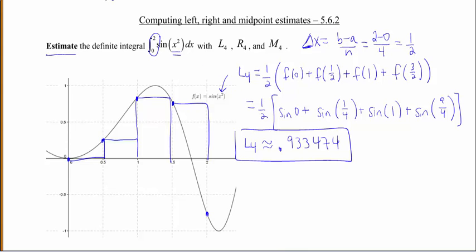Let me switch colors on us. Let's go to R4. So we're still going to be using the same points, but now we're going to be going from the right-hand side instead of the left-hand side. So this time I'm going to start at 0.5. I'm going to pop up and hit my function. So that's going to come over this way.